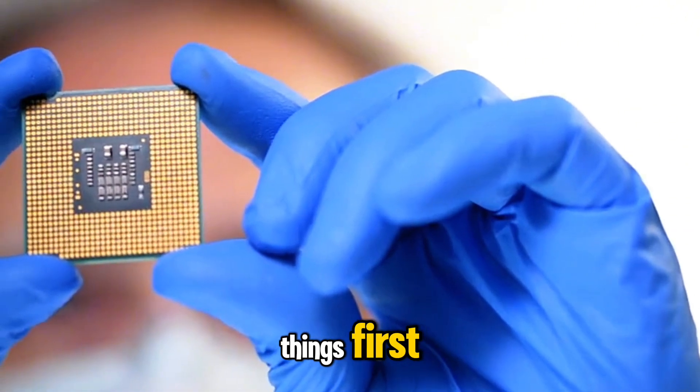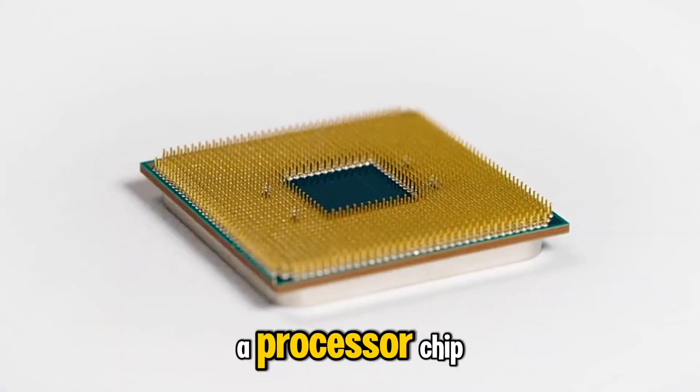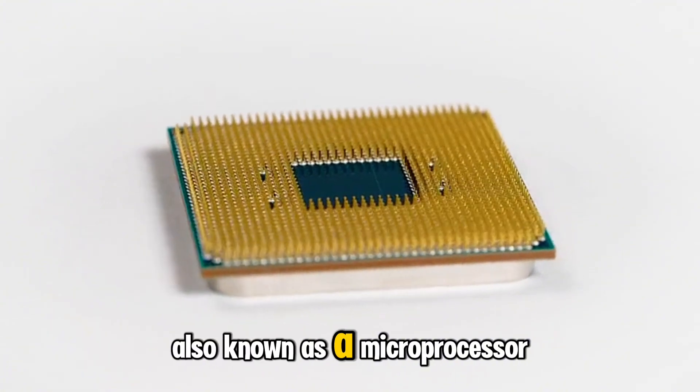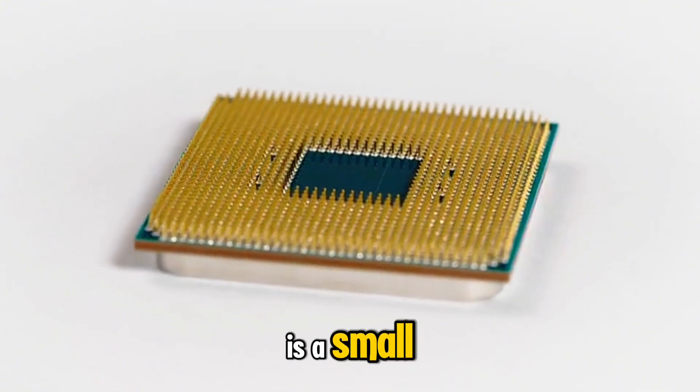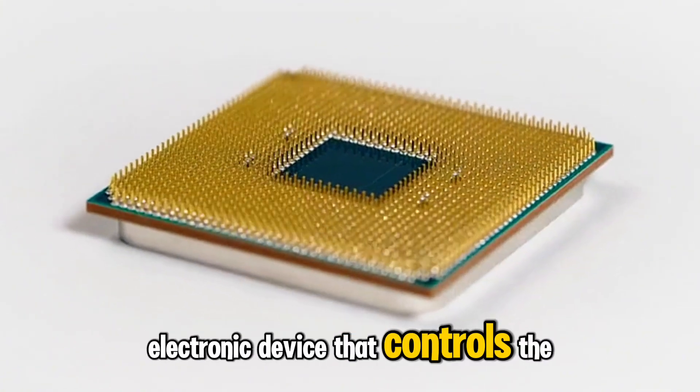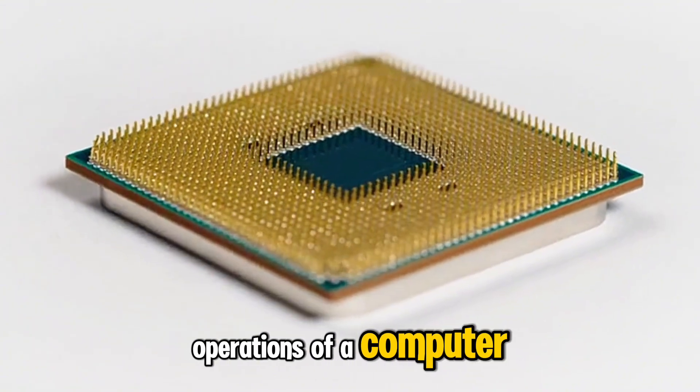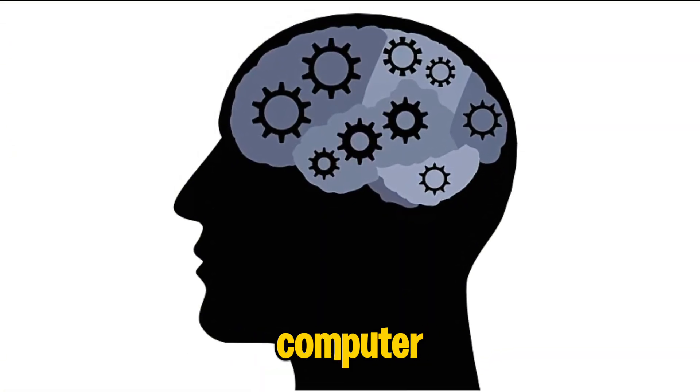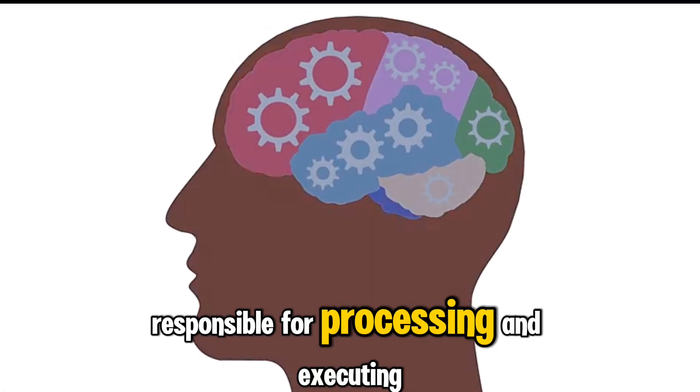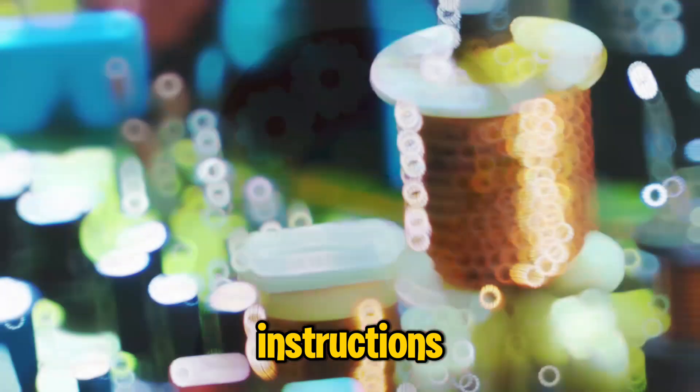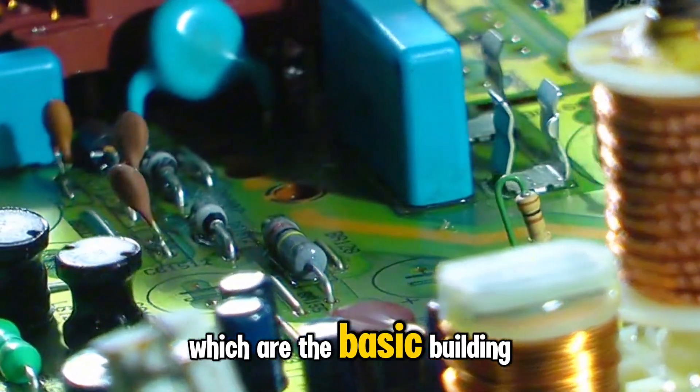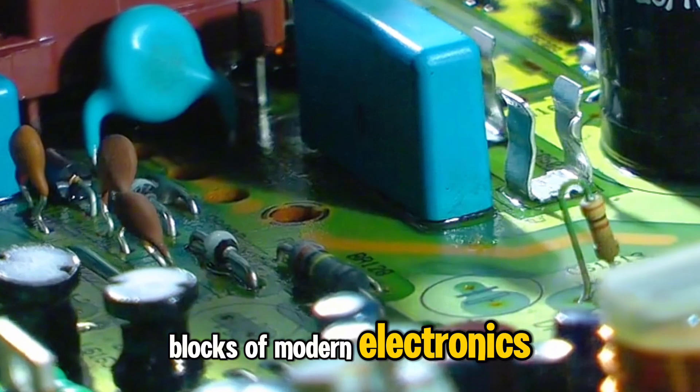First things first, what is a processor chip? A processor chip, also known as a microprocessor, is a small electronic device that controls the operations of a computer. It's the brain of the computer, responsible for processing and executing instructions. It's made up of transistors, which are the basic building blocks of modern electronics.